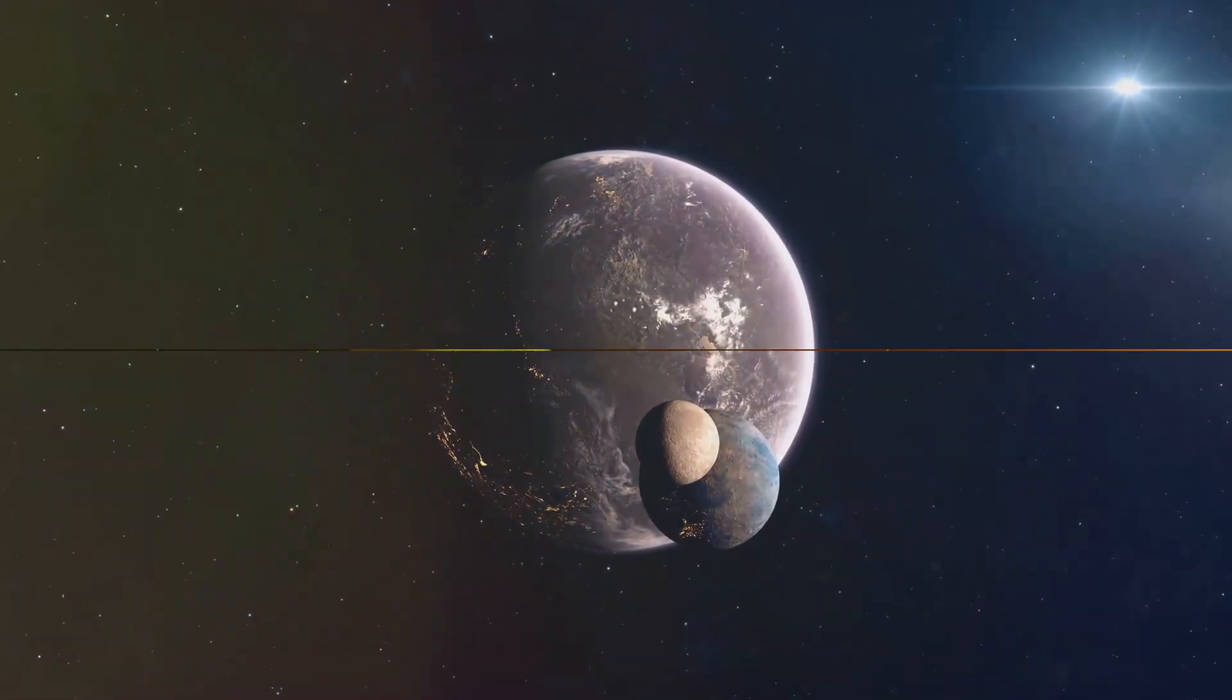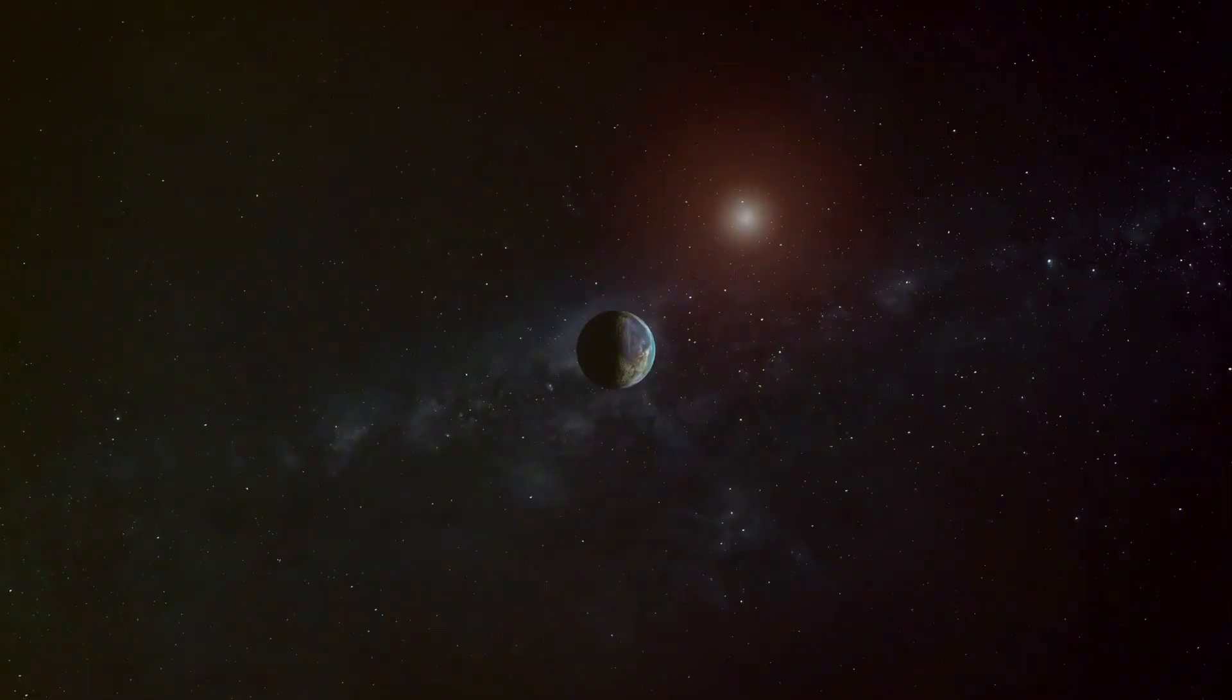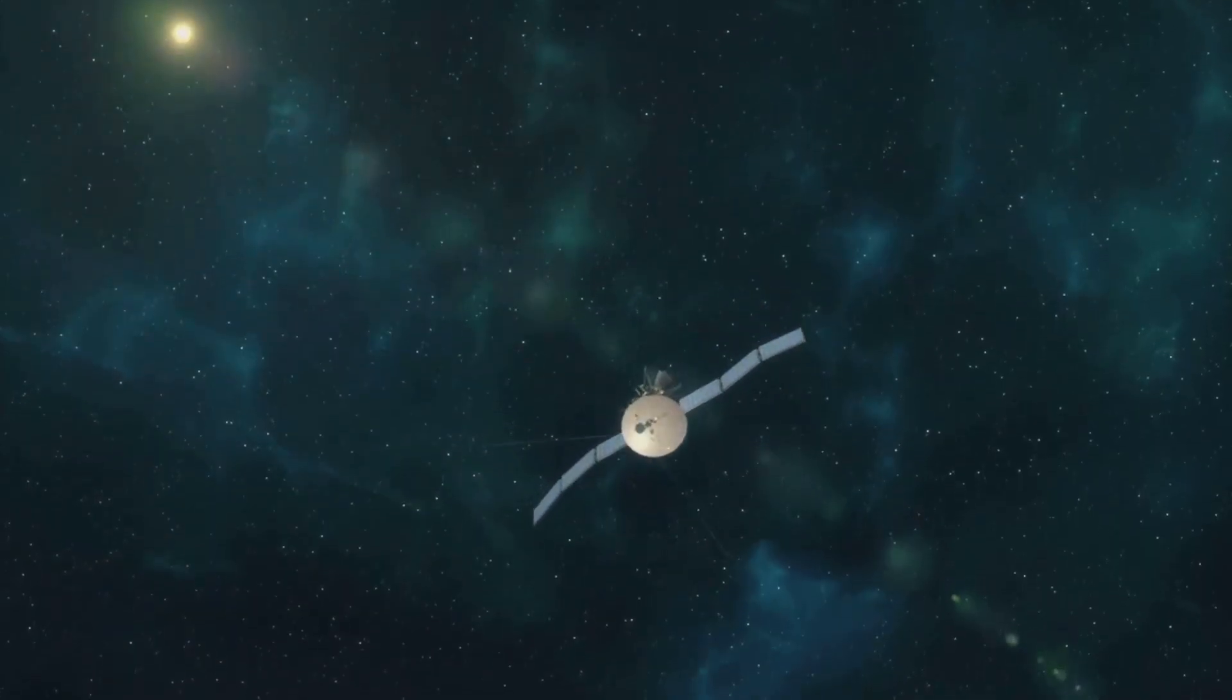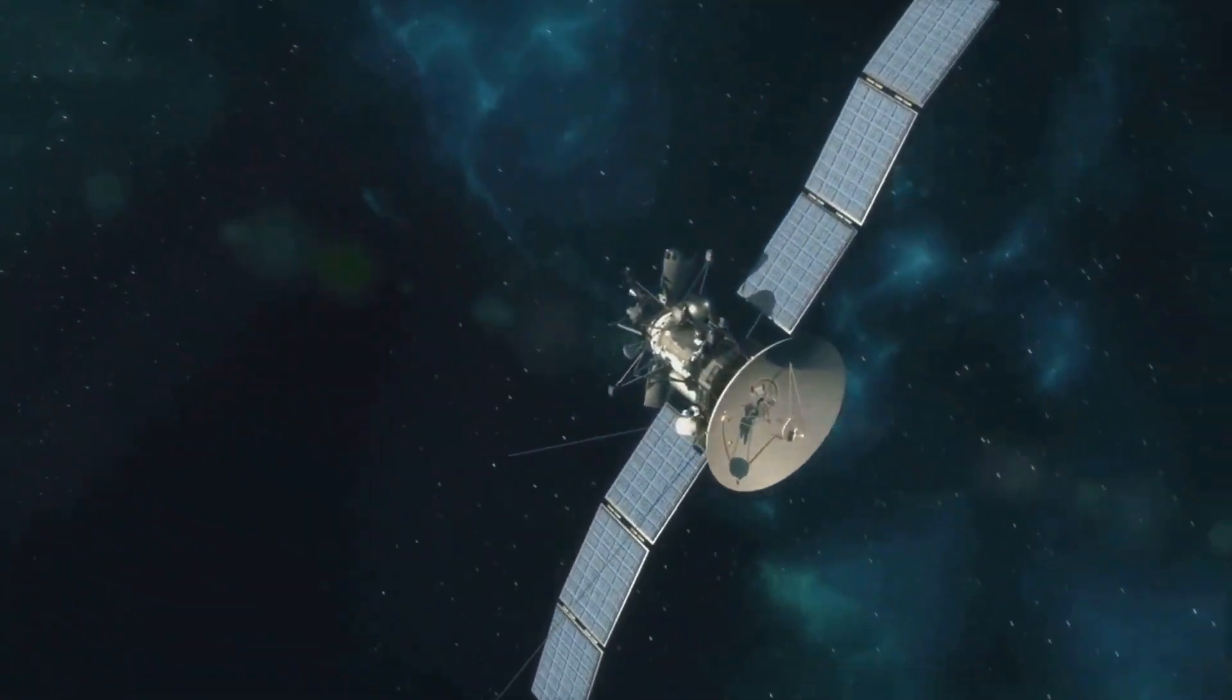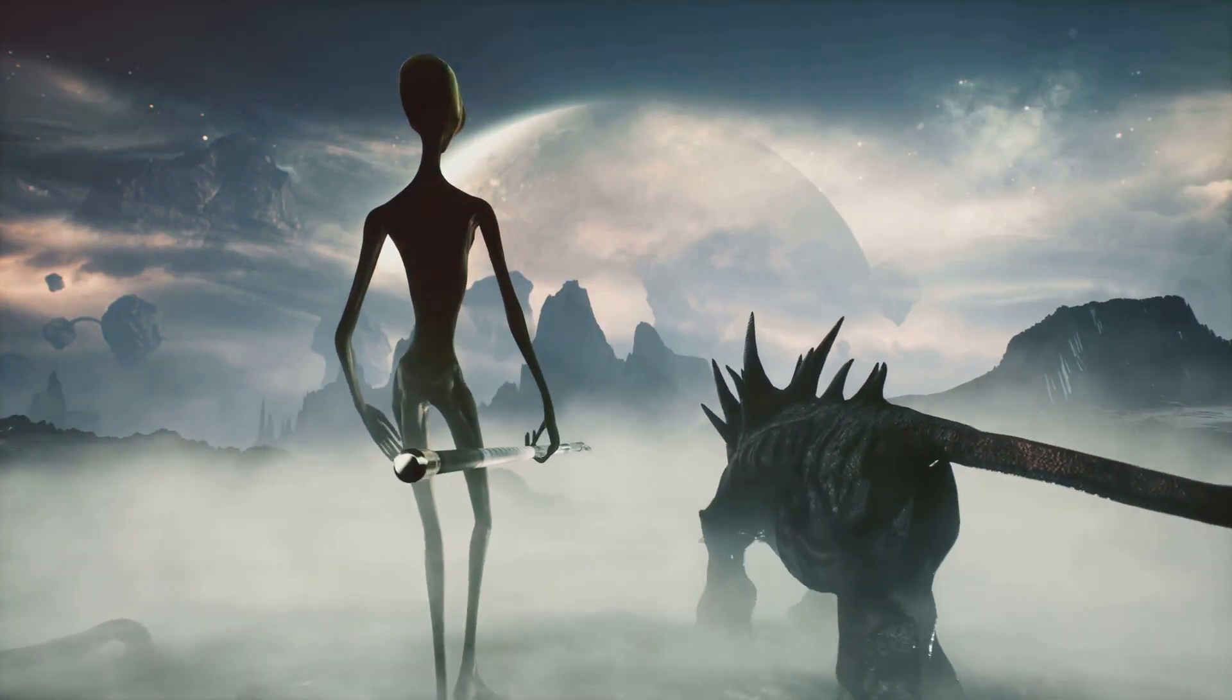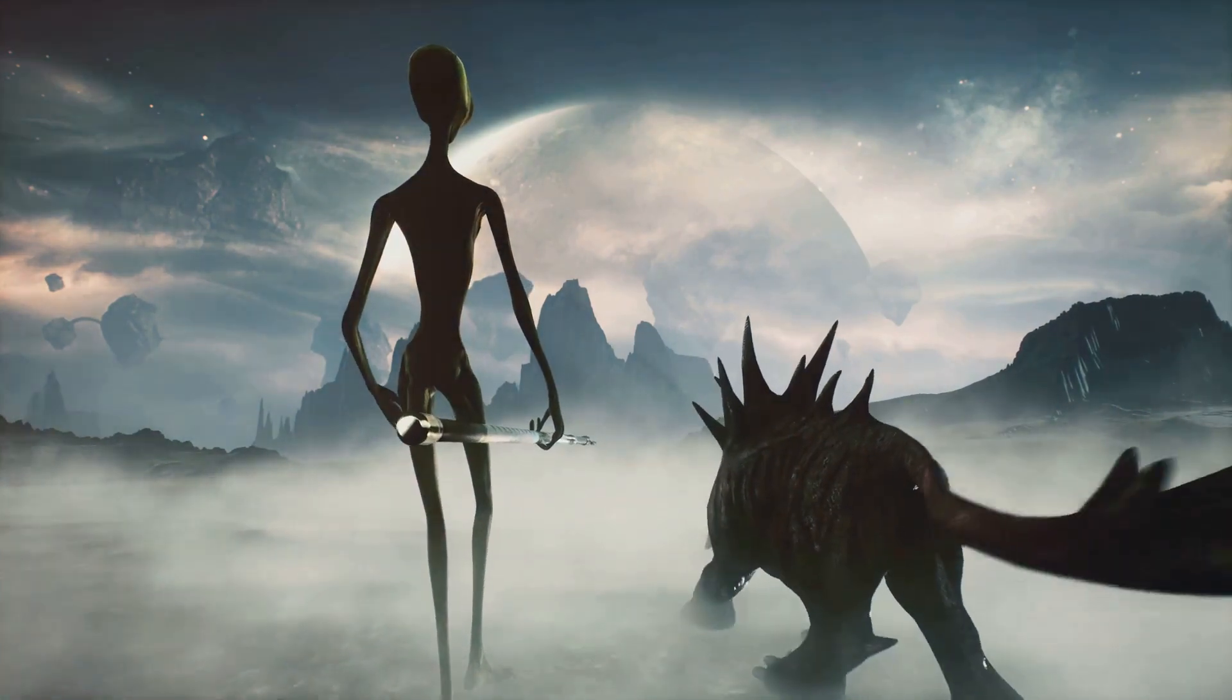Its star provides it with about 75% of the light that Earth receives, potentially making it the most Earth-like planet discovered to date. As we expand our knowledge of the universe and refine our technologies, the possibility of finding life on other planets becomes ever more attainable. These 10 planets represent the best candidates we have so far, but who knows what other worlds we might discover in the vastness of space. The universe is full of mysteries, and the search for extraterrestrial life is one of the most exciting adventures of our time.